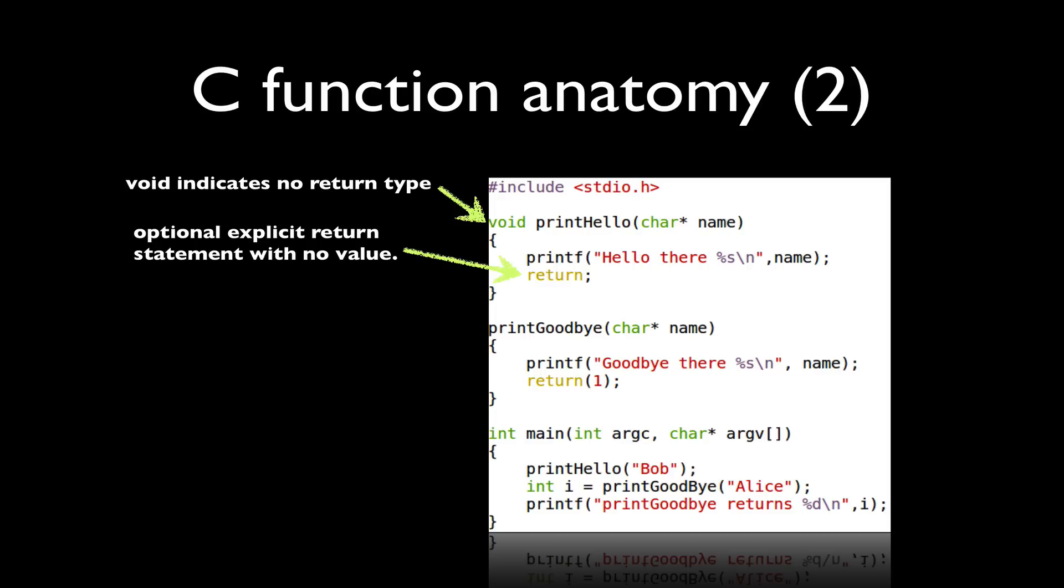We can also leave off this return statement altogether in the case of a function with void type. Now if we neglect to put a return type on our function prototype, such as in my example function print_goodbye here, the compiler is simply going to assume that the return type of this function is an int.